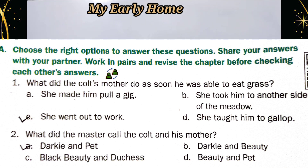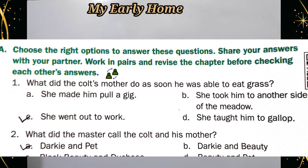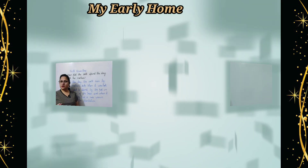First question: What did the colt's mother do as soon as he was able to eat grass? The correct option is C — she went out to work. Second question: What did the master call the colt and his mother? The right answer is A — Ducky and Pet.